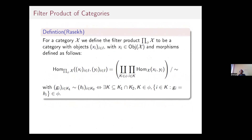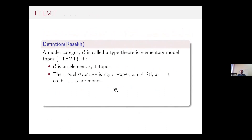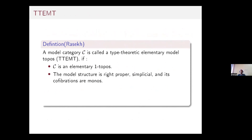Now let me define filter products of categories, which is due to Rasek. For a category X, the objects of the filter product are easy to describe. For morphisms, you choose a k and take morphisms between x_i and y_i for all i, up to an equivalence — meaning they agree on a large set. Rasek also introduced the notion of a type-theoretic elementary model topos as an elementary analog of Shulman's type-theoretic model topos.